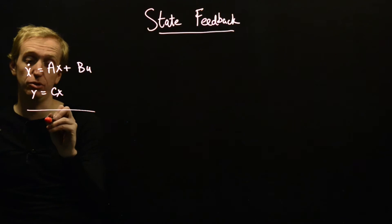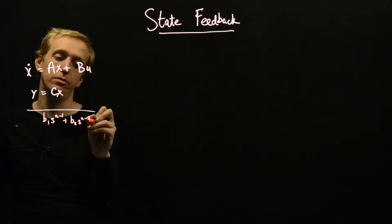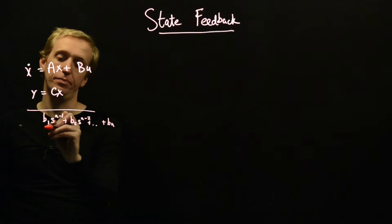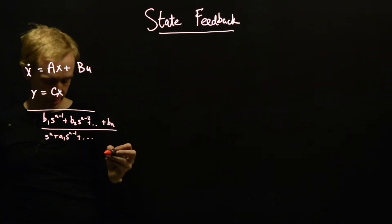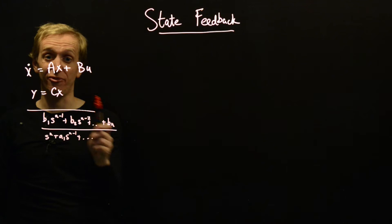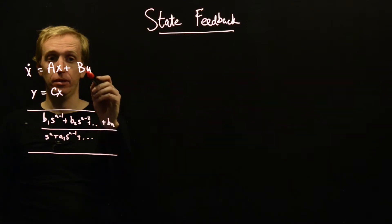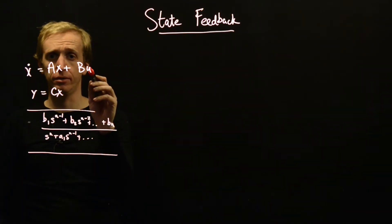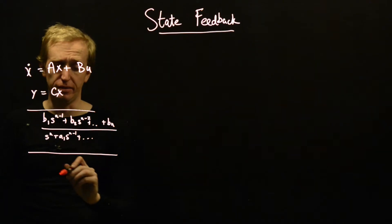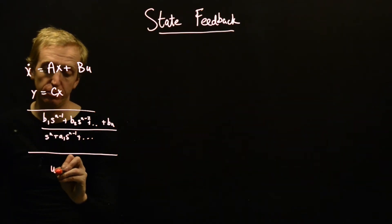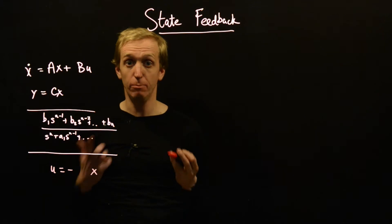So we have our state space description. We also have our transfer function description. Let's just say that the transfer function description of this model is b1 s to the n minus 1 plus b2 s to the n minus 2 and so on plus bn, all over s to the n plus a1 s to the n minus 1 and so on. State feedback is a way of introducing a particular control input that will change the location of the poles of this system.